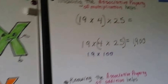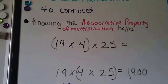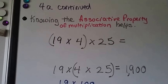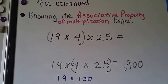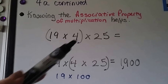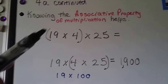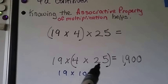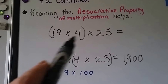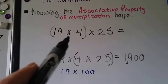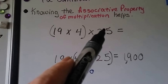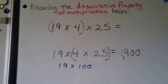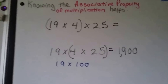Knowing the associative property of multiplication can help us. If we have 19 times 4 times 25, we can regroup — instead of (19×4) first, put the parentheses around (4×25) because that's more compatible, like four quarters in a dollar. That gives us 100 times 19, which is 1,900 — some of you can do that in your head without a calculator.